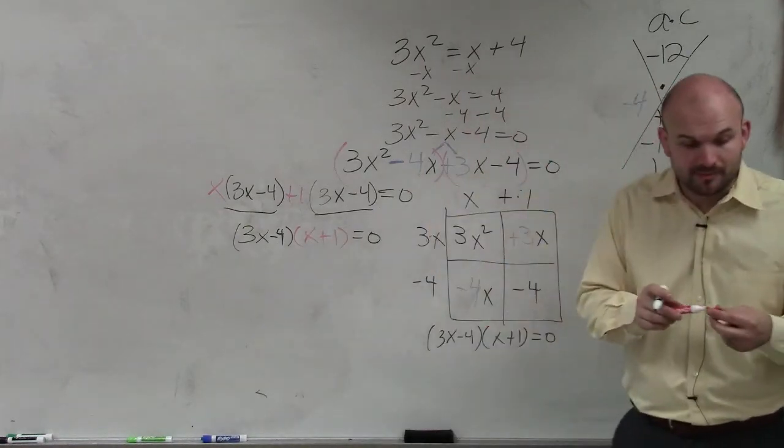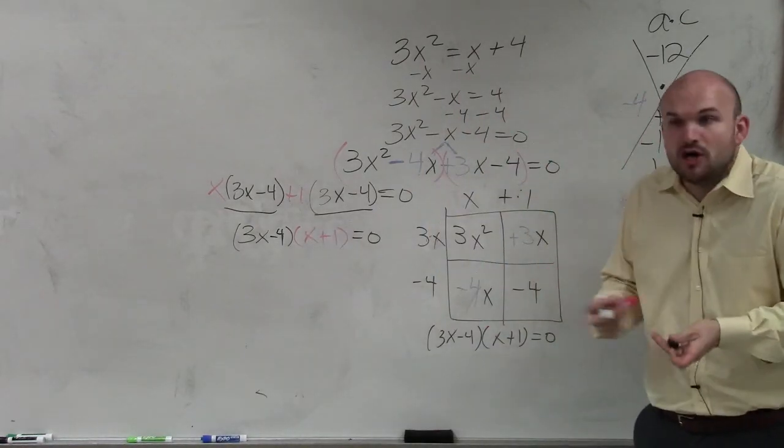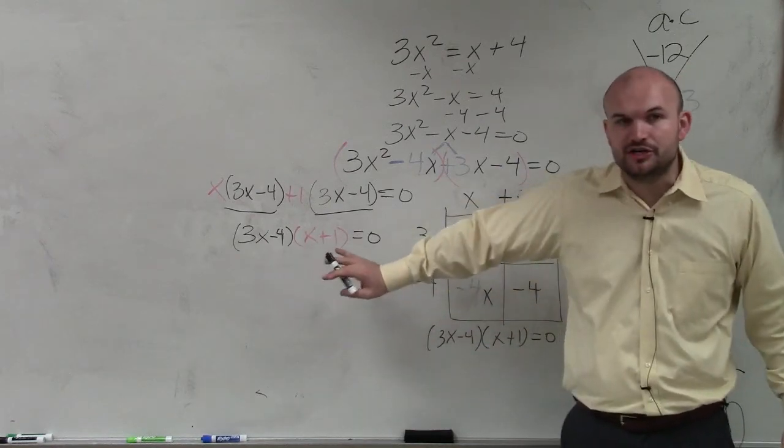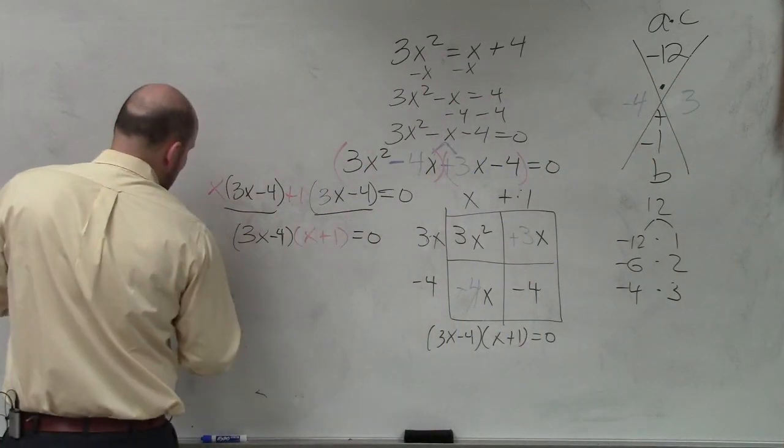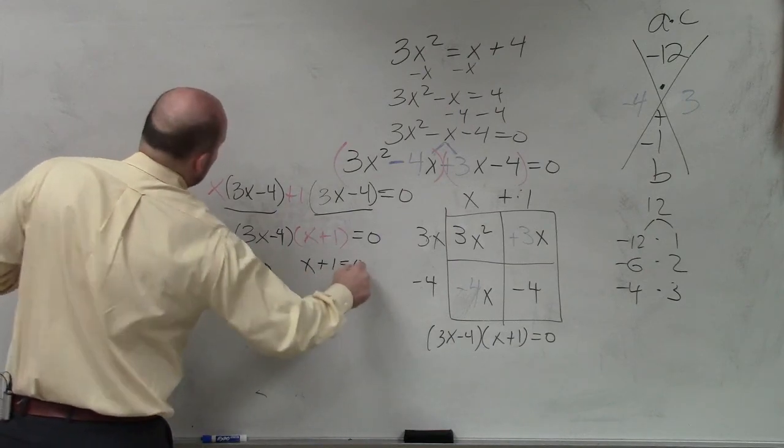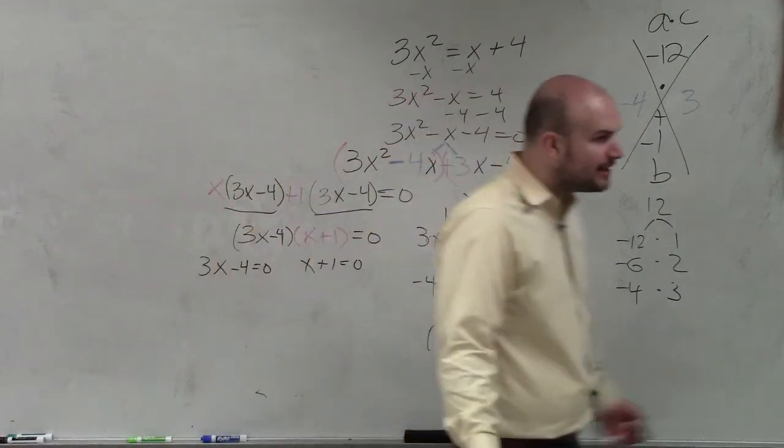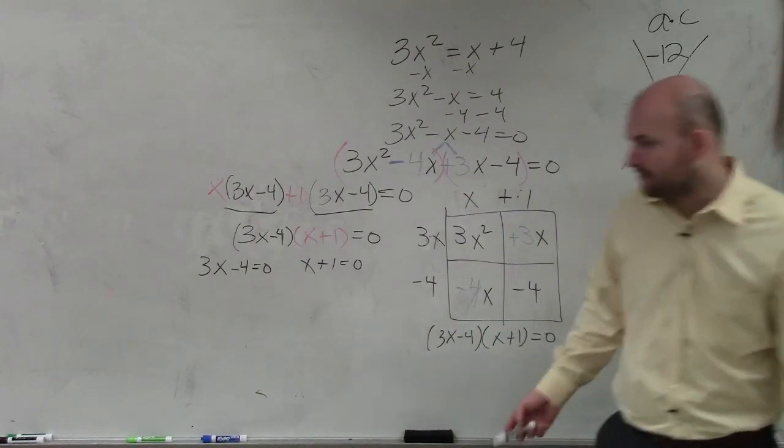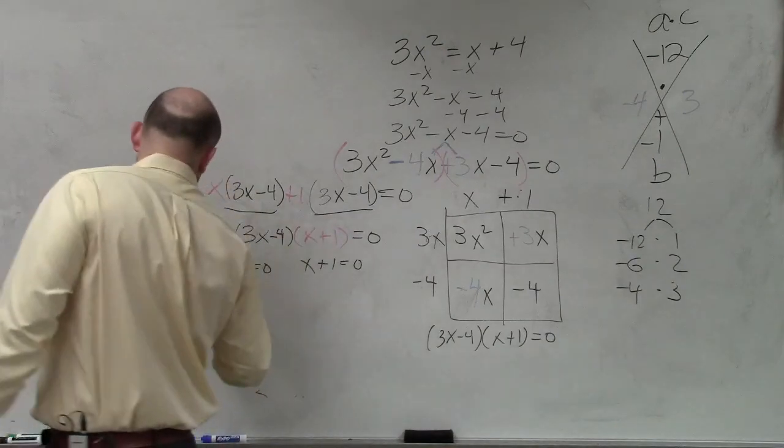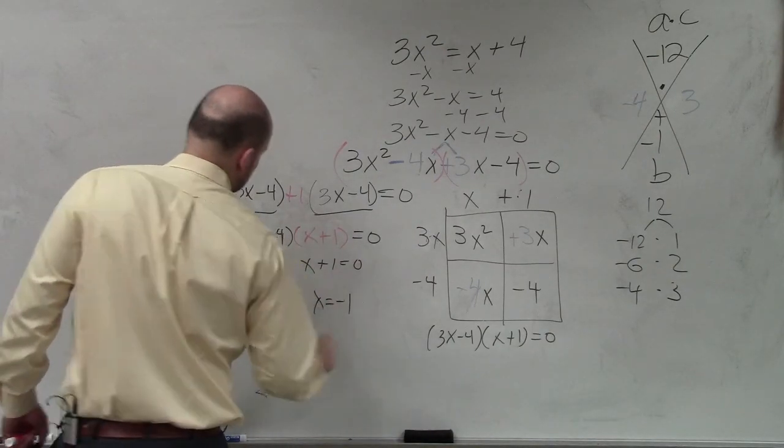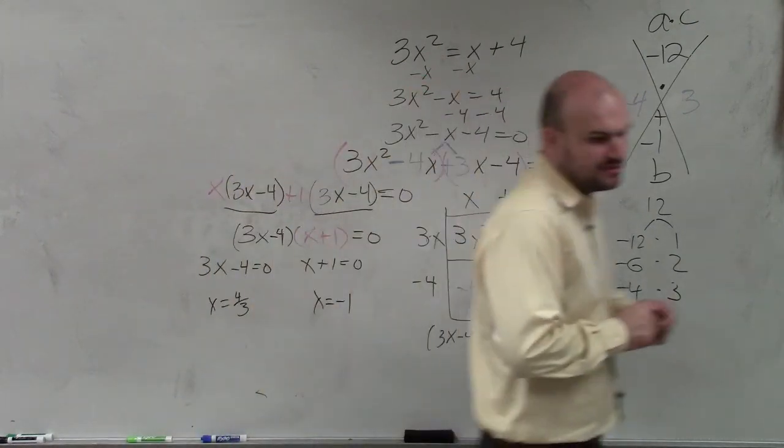All right. Now, we're still not done with the problem. Because again, we haven't solved for x. So again, to solve for x, ladies and gentlemen, what we simply need to do is apply the zero product property. We need to set both of them equal to zero. Now, do you guys want me to show you how to solve for zero? Or can I just tell you what the answers are when you solve for zero? Solve for x. I'm sorry. So x = 4/3 and x = -1.